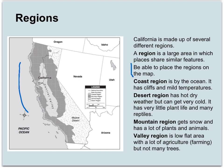What you have to be able to do in order to get a good grade is be able to place the regions on the map. These are the regions you have to know where they are found. The coast region — that's by the ocean — has cliffs and mild temperatures. You can see the coast region comes all the way along here. Anything that's close to the beach, close to the ocean, is a coast region.